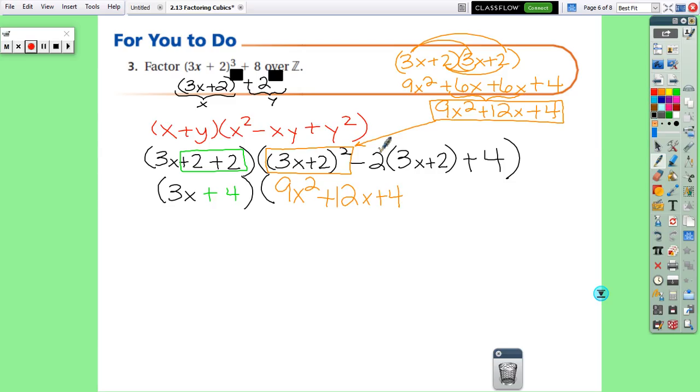So in that set of parentheses, we're going to get 9x² + 12x + 4. Then this part, we just have to distribute, but we have to distribute the negative through with it. So minus 6x minus 4, and then this plus 4 just drops down.